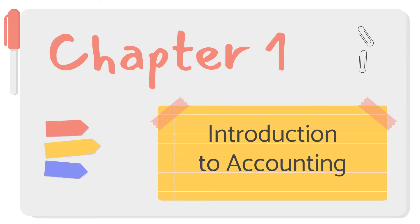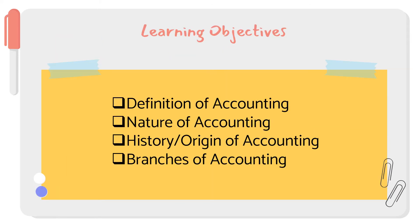To start off, we are going to discuss Chapter 1: the Introduction to Accounting. For today, we need to learn the following items: first, the definition of accounting; then the nature of accounting; then the history or origin of accounting; and the branches of accounting or the areas of specialization.